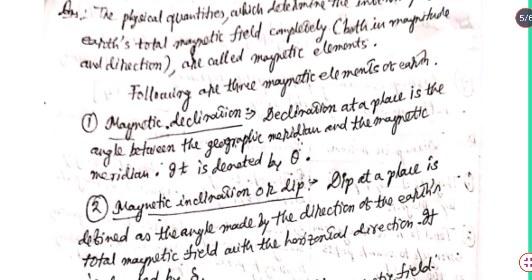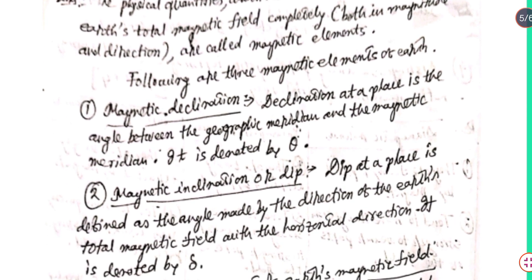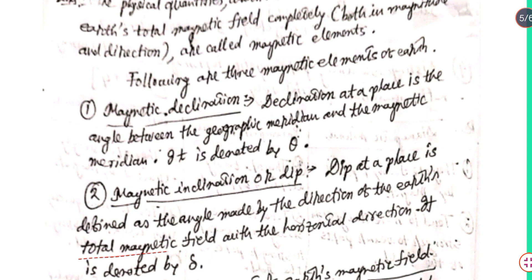Magnetic inclination or dip: Dip at a place is defined as the angle made by the direction of the earth's total magnetic field with the horizontal direction. It is denoted by delta.